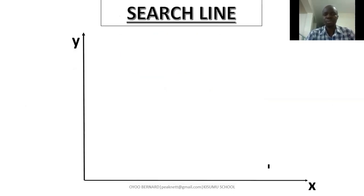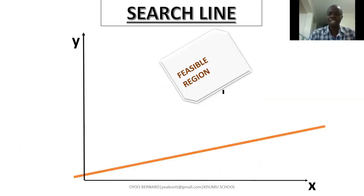Let's continue and see how we will use the search line once it's drawn. So we have our y-axis and then our x-axis. Suppose that that's our feasible region. Then using those two points, we have come up with a search line. So that's the search line.